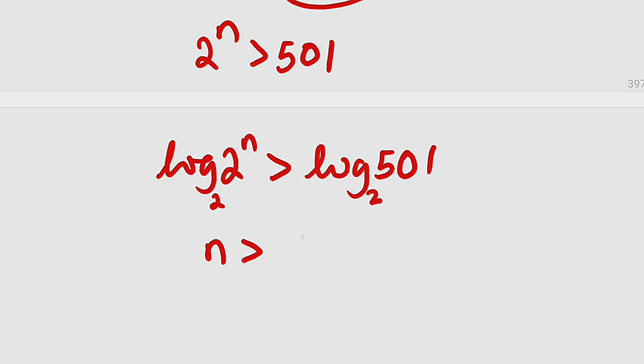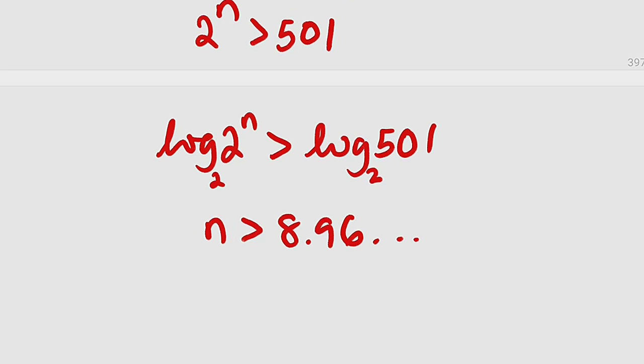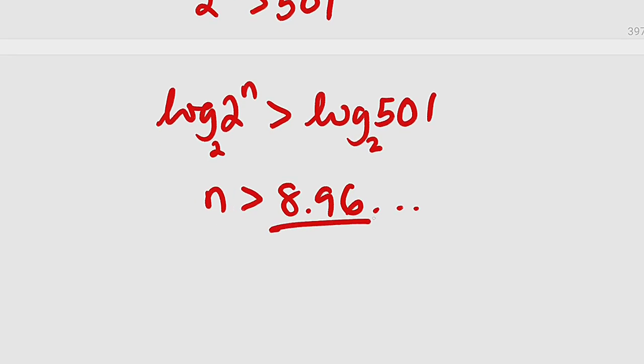According to my calculator, we have approximately 8.96 and so on. But remember that n is an integer, a positive integer, and we are looking for n greater than this one. The only integer, the smallest one after this one, will be 9. So therefore, n is equal to 9.